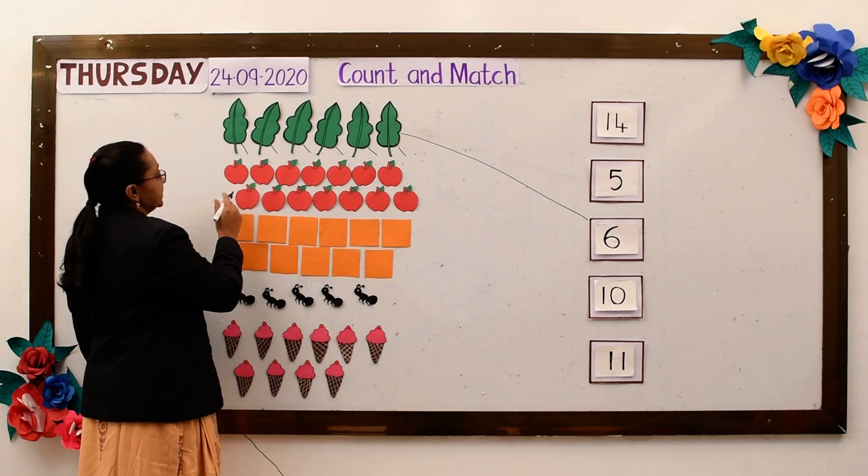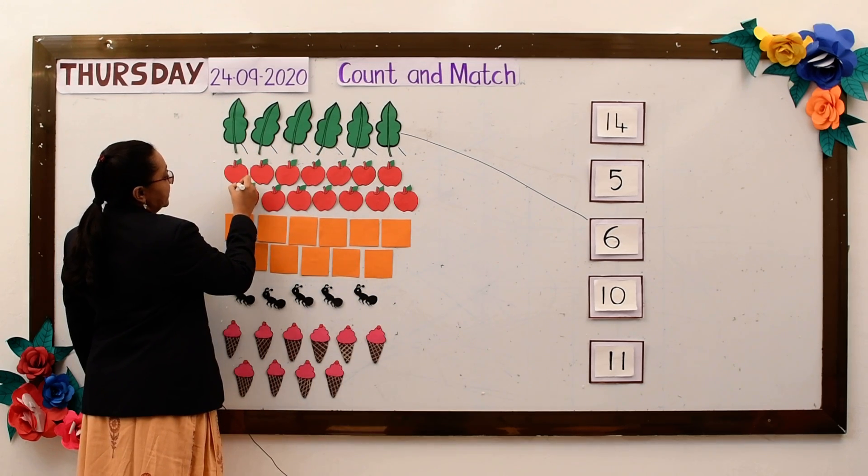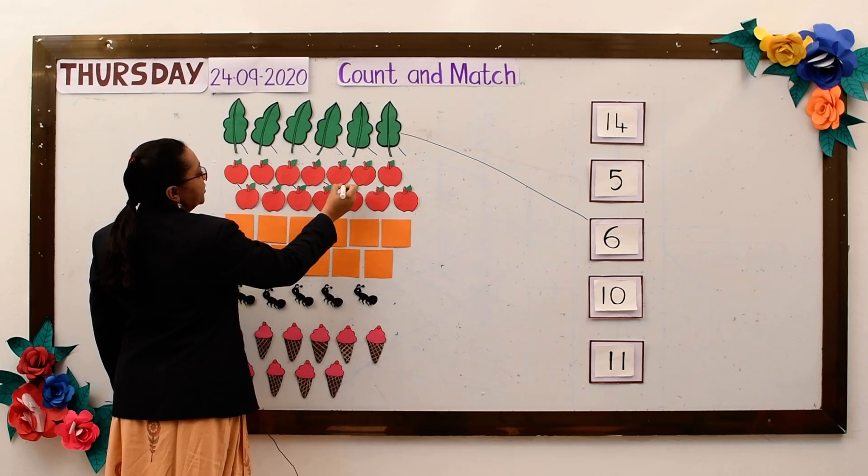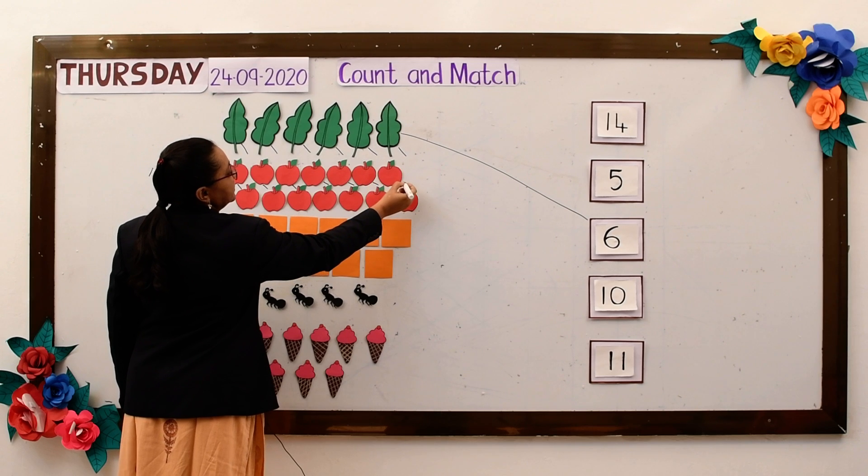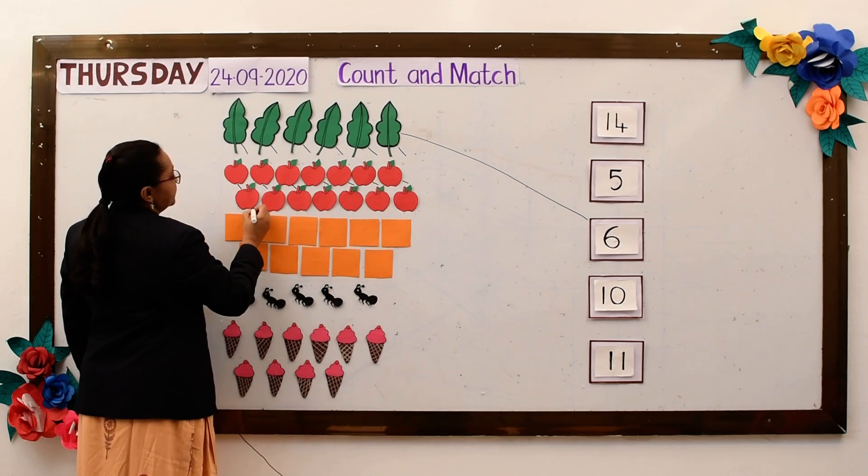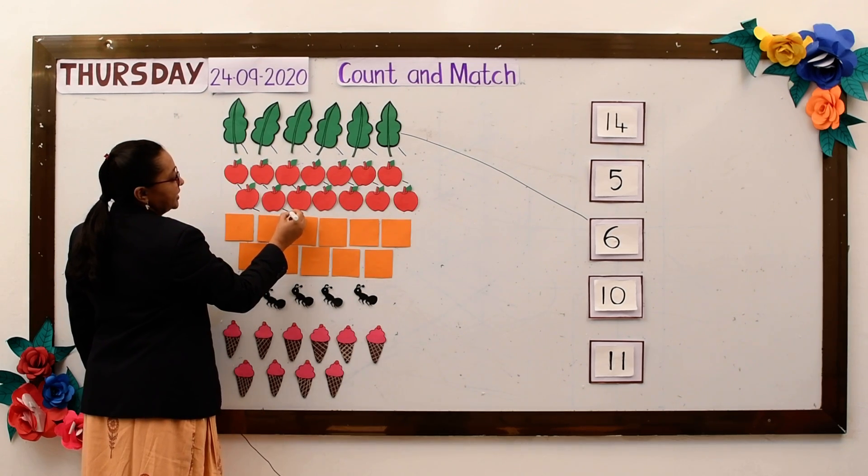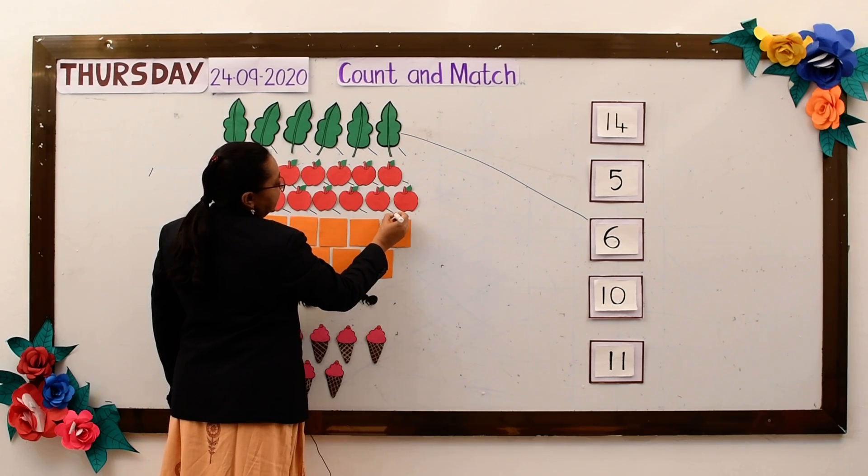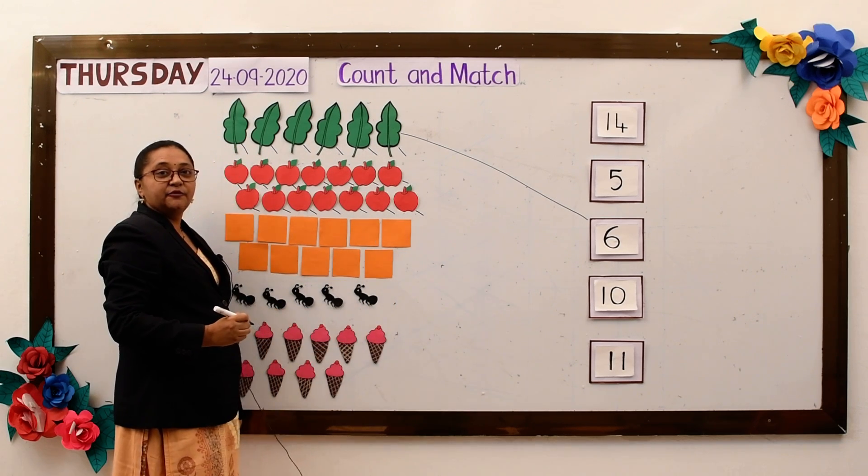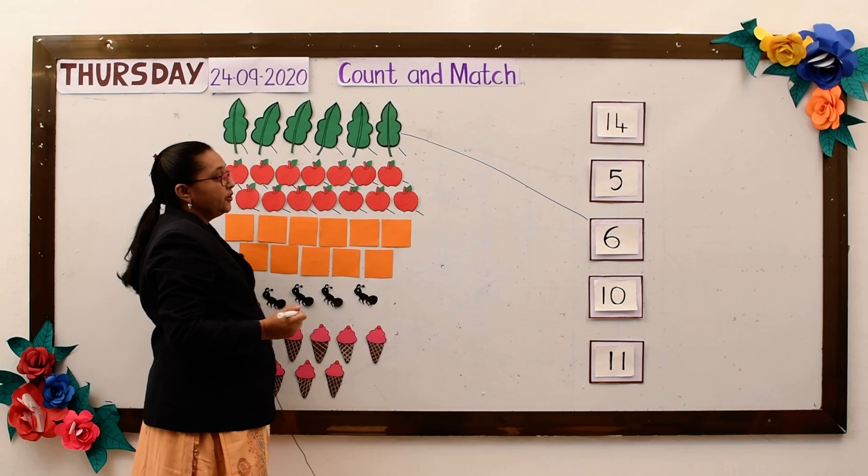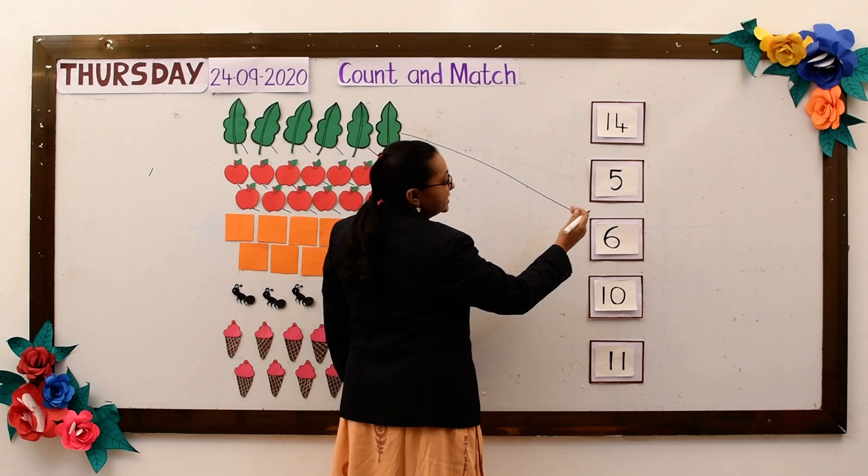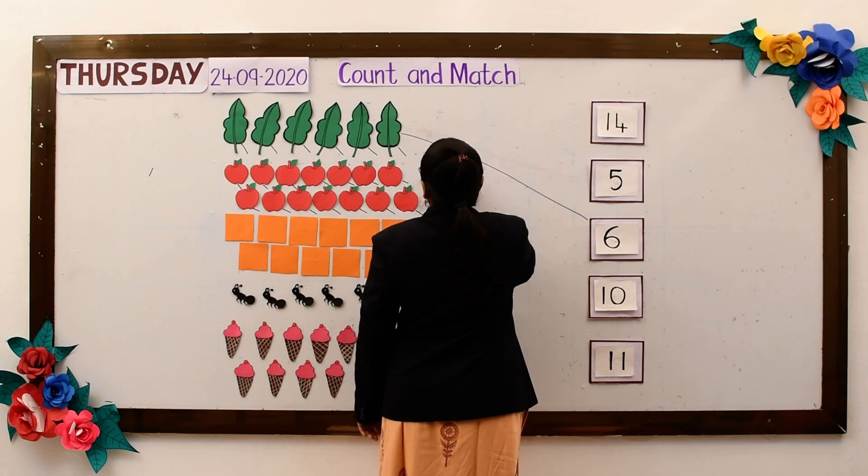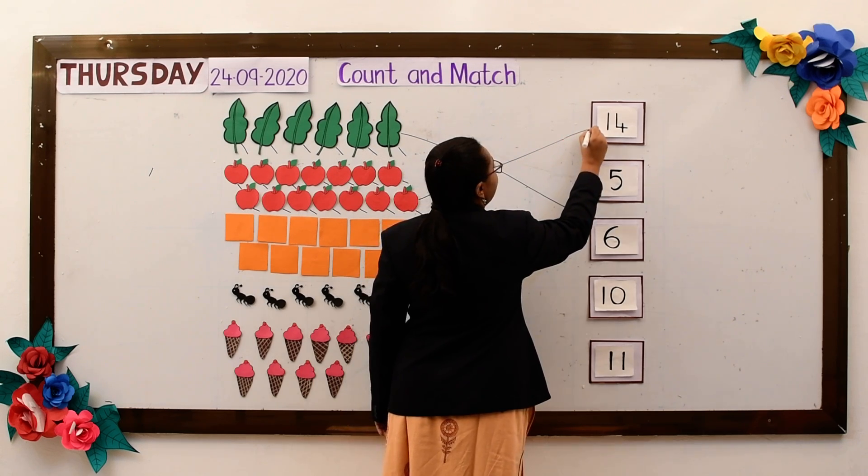Now our next object is apple. 1, 2, 3, 4, 5, 6, 7, 8, 9, 10, 11, 12, 13, 14. So how many objects I have counted? 14 objects. Now where is my number 14? Is this number 14? No. Is this number 14? Yes. So I will match it to the number 14.